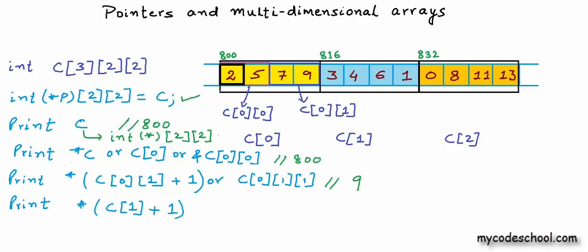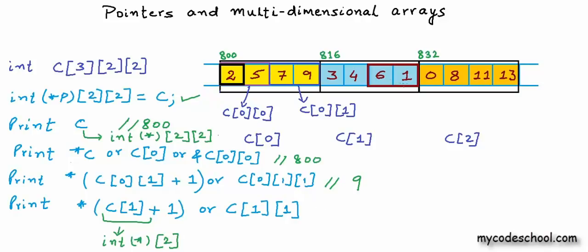What will be the output for *(c[1] + 1)? c[1] returns a pointer to the first one-dimensional array in c[1] — the block containing integers 3 and 4. Adding 1 performs pointer arithmetic to the next one-dimensional array containing 6 and 1. Dereferencing gives that one-dimensional array, and using its name returns a pointer to the first element, integer 6. The output will be 824. The block storing integer 3 starts at 816, the next is 820, and the next is 824.